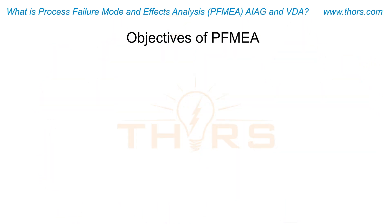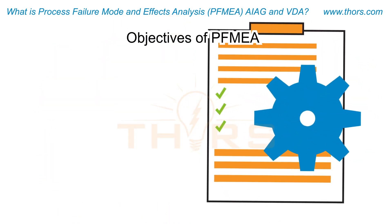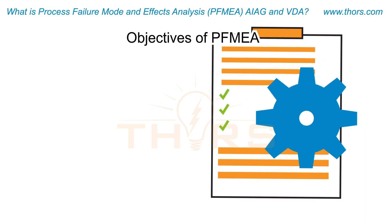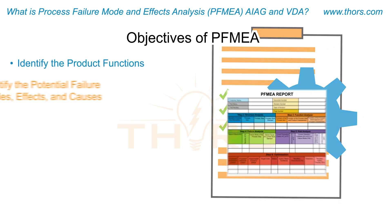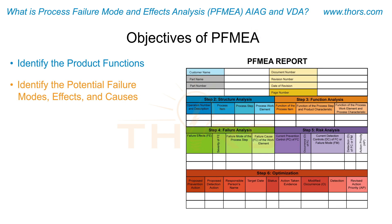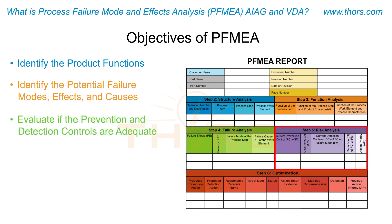The main objectives of PFMEA are to identify the product functions, to identify the potential failure modes, effects, and causes associated with each process step, and to evaluate whether the already planned prevention and detection controls are adequate.